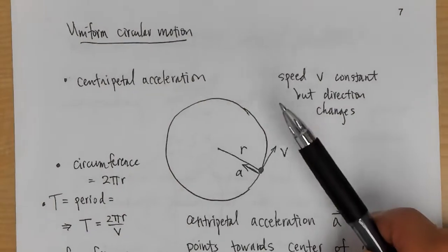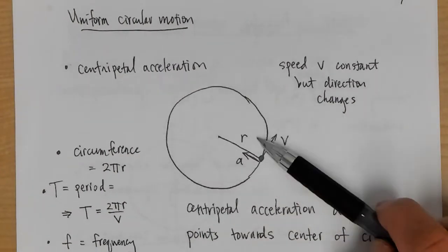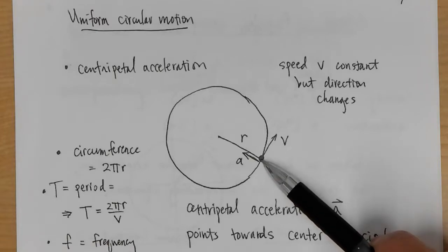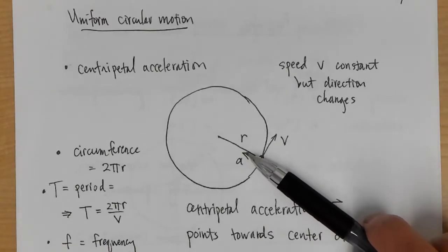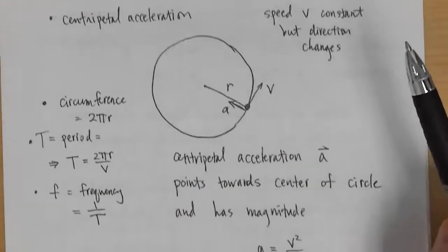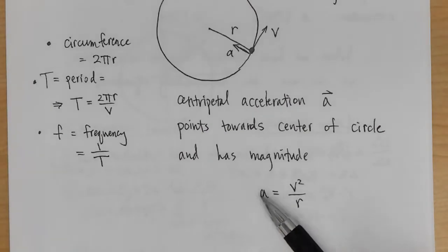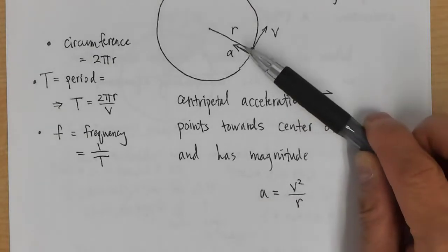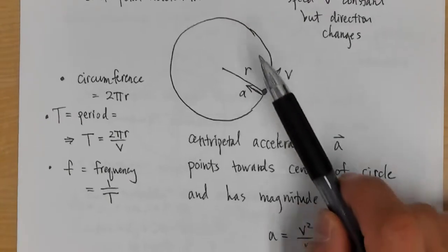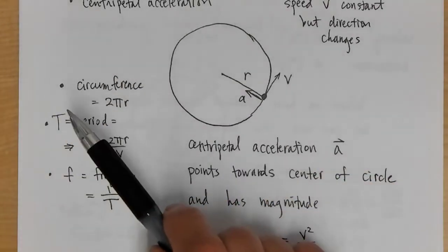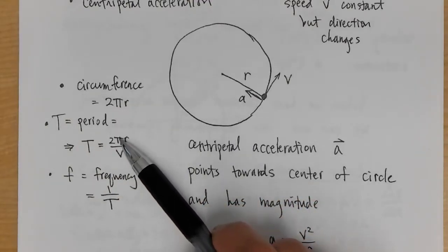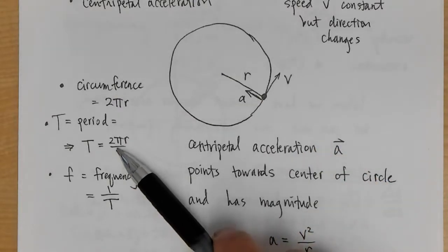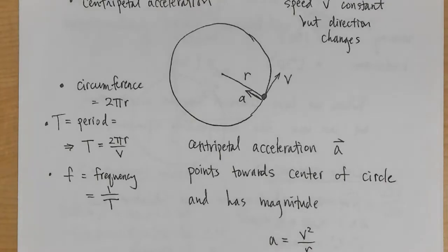For uniform circular motion, an object moves around a circle at constant speed, but the velocity changes direction. There must be a centripetal acceleration pointing toward the center of the circle with magnitude V²/R. The circumference is 2πR, and the period T = 2πR/V. Frequency is 1/T.